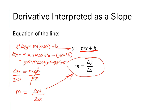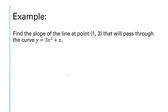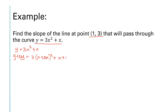Let's solve an example. Find the slope of the line at point (1, 3) that passes through the curve y = 3x² + x. We follow the long method steps: y + delta y = 3(x + delta x)² + (x + delta x). Then isolating delta y, we subtract y from both sides to get delta y = 3(x + delta x)² + (x + delta x) − y.